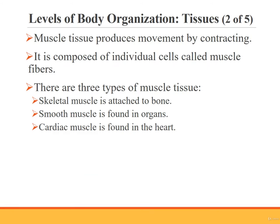Muscle tissue produces movement in the body by contracting or shortening in length. Muscle tissue is made of individual cells called muscle fibers. There are three basic types of muscle tissue: skeletal muscle, smooth muscle, and cardiac muscle. Skeletal muscle is attached to bone. Smooth muscle is found in internal organs like the intestine and the uterus. Cardiac muscle is found only in the heart.